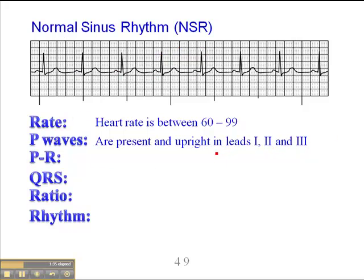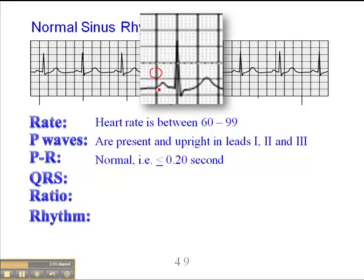The PR interval in this case is 0.2 seconds or less — no more than five small squares. What I try to do is find a P-wave that starts on a dark line. You can see the P-wave starts there, and the end of the PR interval, where the QRS begins, is right about there at about 4 millimeters or 0.16 seconds. The PR interval could be as long as 0.20 seconds, so up to five small squares.